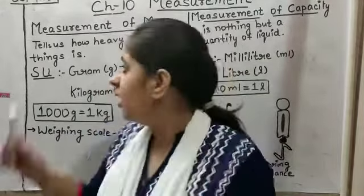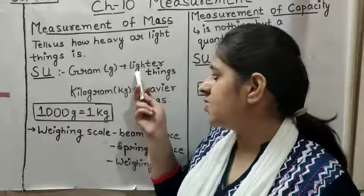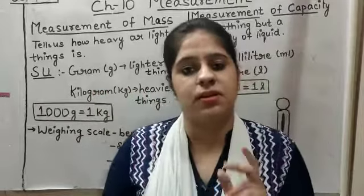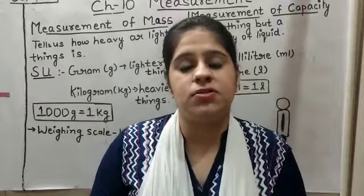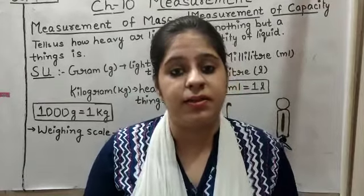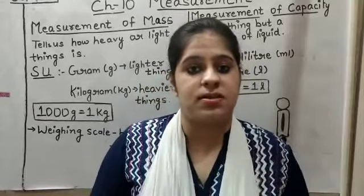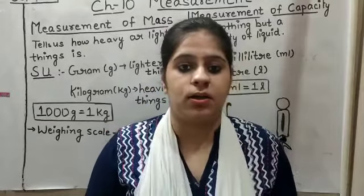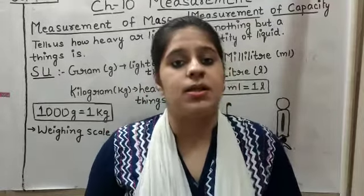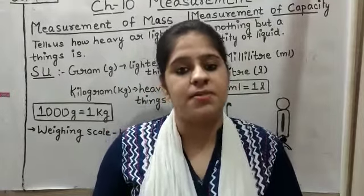What is the standard unit of measurement of mass? There are two standard units of measurement of mass: gram and kilogram. Gram is denoted with a small 'g' and it is used to measure smaller, lighter things — for example, a packet of chips or a packet of biscuits. These come in grams.